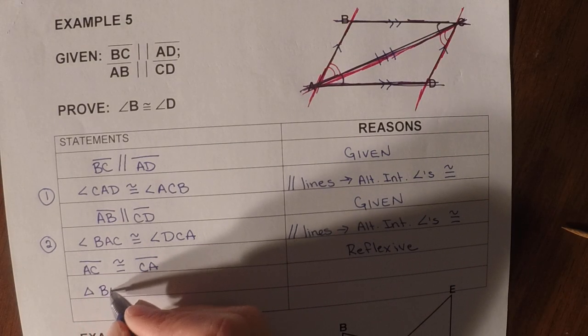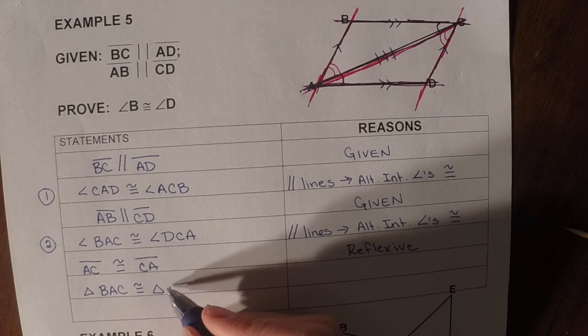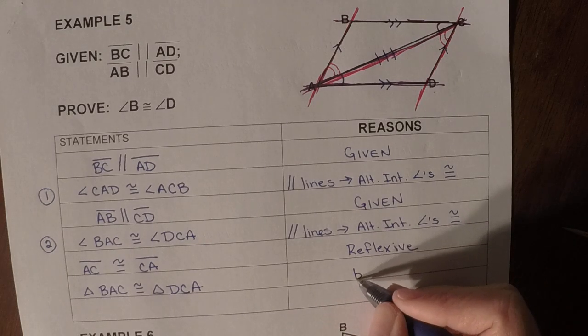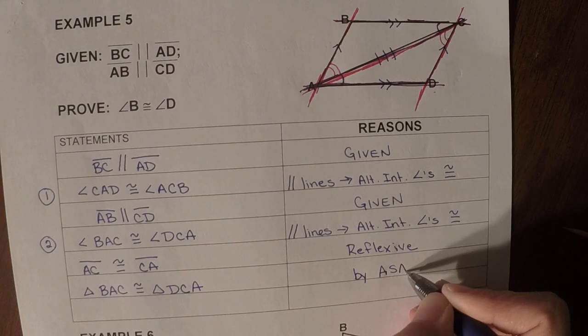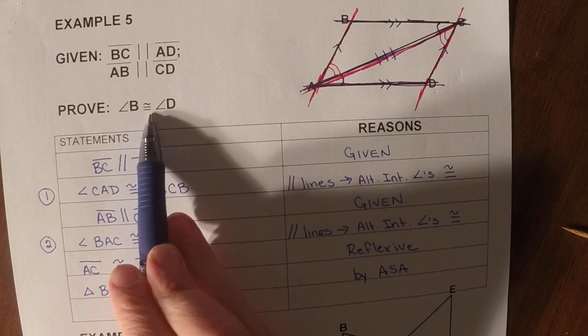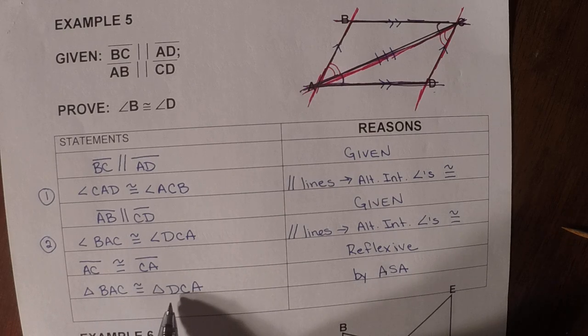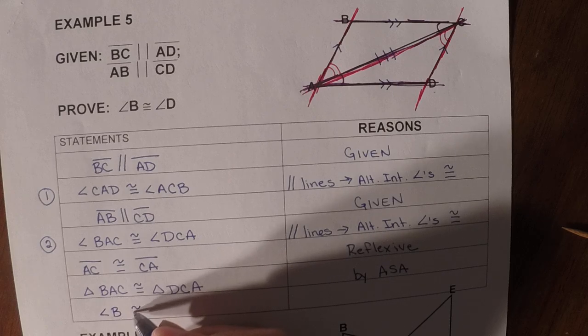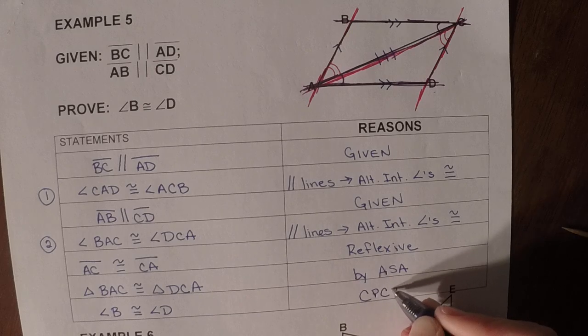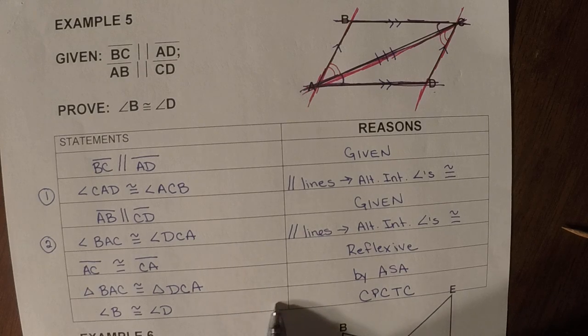And so now I could state that the triangles were congruent. So triangle BAC is congruent to triangle DCA. And this is by angle side angle. So then the last step is, can we prove that angle B is congruent to angle D? Well, yes, because if these triangles are congruent, the corresponding angles are B and D. So we could say angle B is congruent to angle D. And this is CPCTC. So the only thing that's changing from the last set of notes that you guys took is this last step.